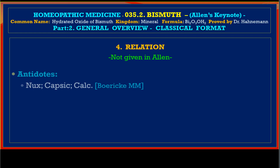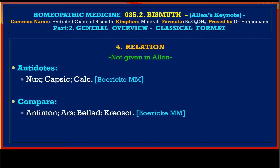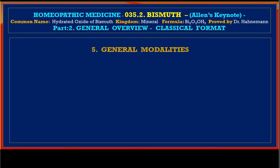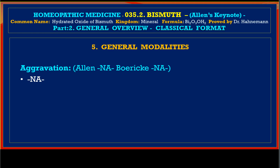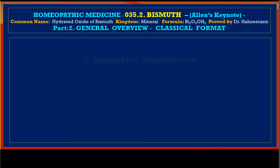Relationships: antidotes are Nux, Capsicum, and Calcarea. Compare with Antimonium, Arsenic, Belladonna, and Kreosote. General modalities — aggravation and amelioration are not given in Boericke and Allen's keynote materia medica.